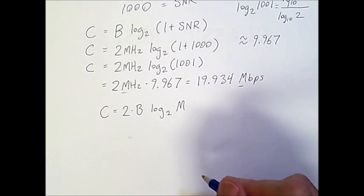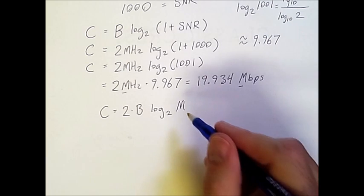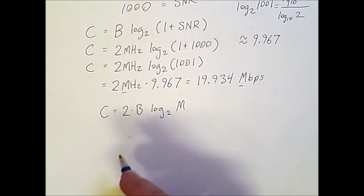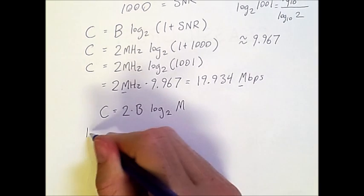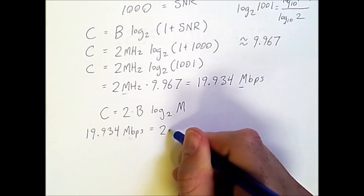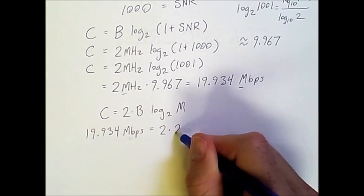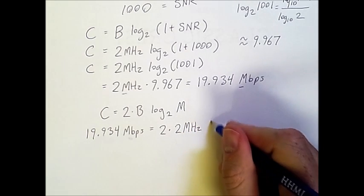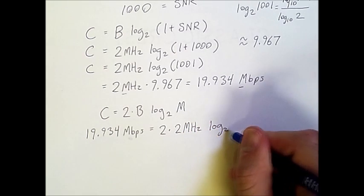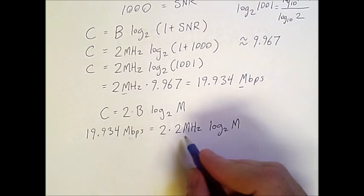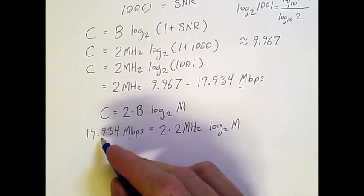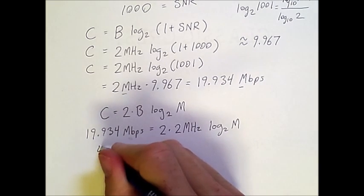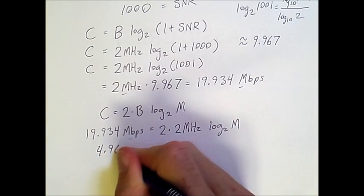And so, M is the number of signal levels. We want to determine what M needs to be for this channel to work. So, we have this capacity, which we can plug in. And we know that the bandwidth is 2 megahertz. So, now we simply need to solve for M. So, 2 times 2 is 4. And if we divide this side by 4, using a calculator, we get 4.9835.